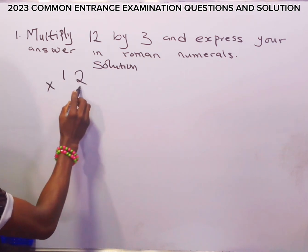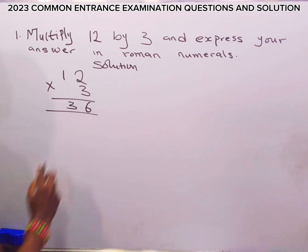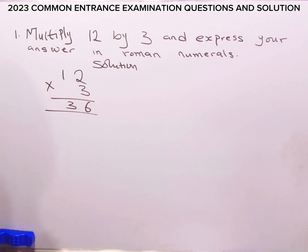12 times 3. 3 times 2 is 6, 3 times 1 is 3. So our value of 12 multiplied by 3 is 36.